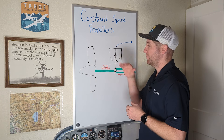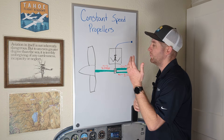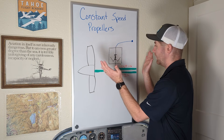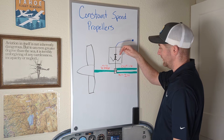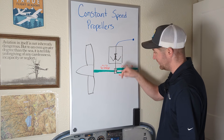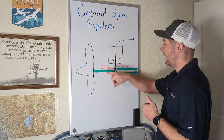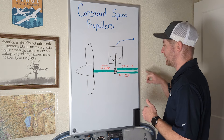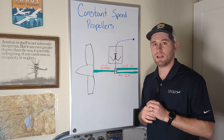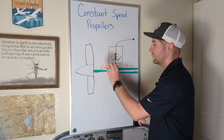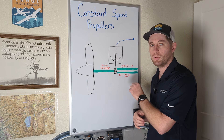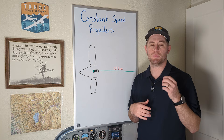Just the opposite happens when you pitch up. The prop wants to slow down, the flyweights fall inwards, which pushes that plate down and thus the pilot valve down, and allows oil to flow out of the hub and back to the engine. By the way, the oil used for the propeller hub is engine oil that's taken from the oil sump.